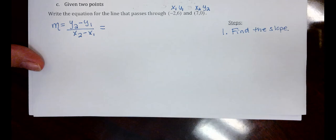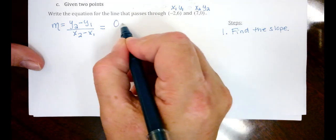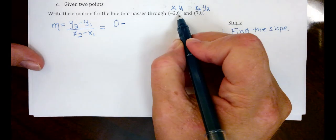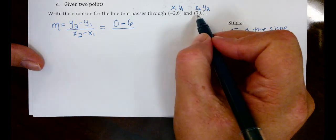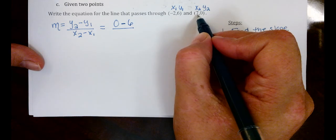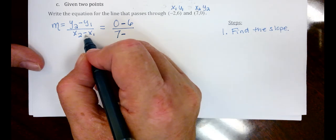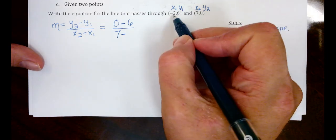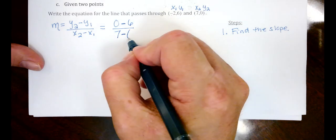Now let's plug this into the formula for the slope. Y2 in our problem is 0 minus Y1 in our problem is 6 over X2 which is 7. Careful here, minus from the formula and then I have a minus 2 or a negative 2 for X1. So we're going to put that in parentheses.